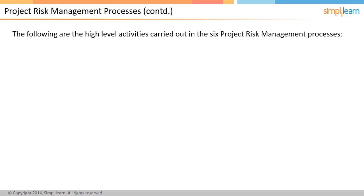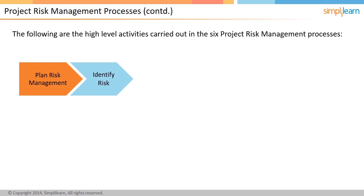We will now look into the high-level activities carried out in the six project risk management processes. The first process is plan risk management, in which you define the scope and objectives of the project risk management processes. The key output of this process is the project risk management plan. The second process is identify risks, in which you identify the maximum possible known risks. The key output is the risk register.